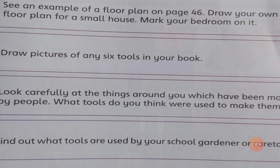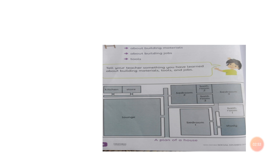For your third task, see an example of a floor plan on page number 46. Draw your own floor plan for a small house and mark your bedroom on it. On page number 46 you can see a house plan — it has a kitchen, store, lounge, three bedrooms, three bathrooms, and a study room.